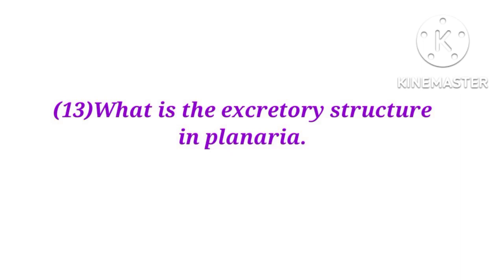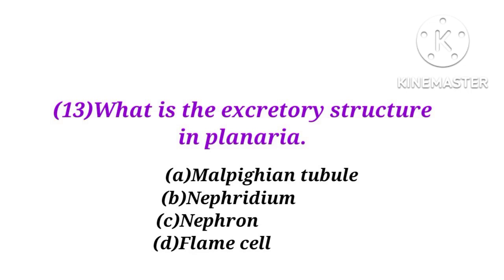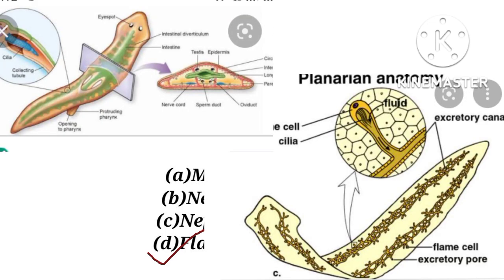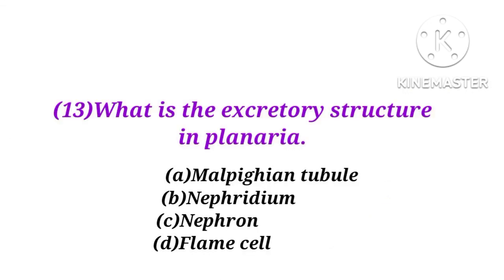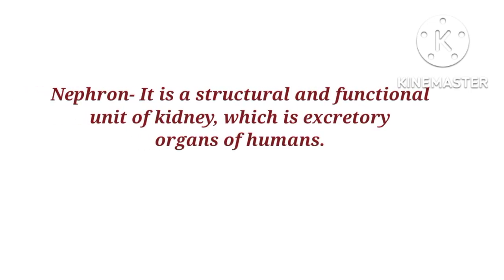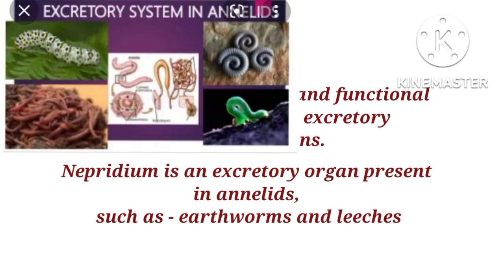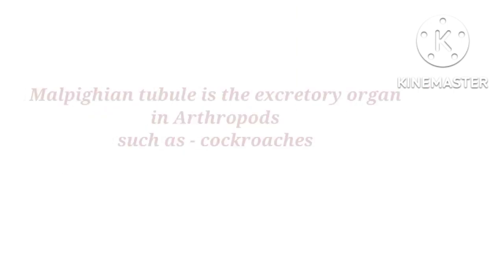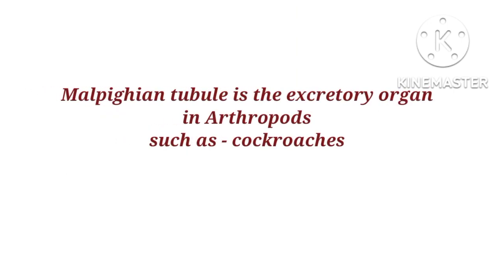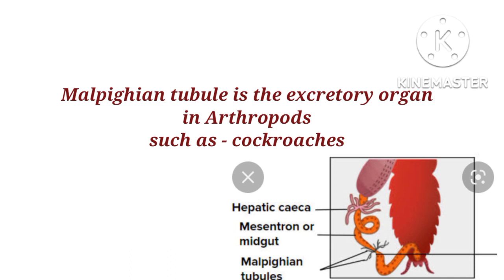Number 13. What is the excretory structure in planaria? Options: Malpighian tube, nephridium, nephron, or flame cell. The answer is D — flame cell. Nephridium is an excretory organ present in annelids such as earthworms and leeches. Malpighian tubules are the excretory organ in arthropods such as cockroaches.